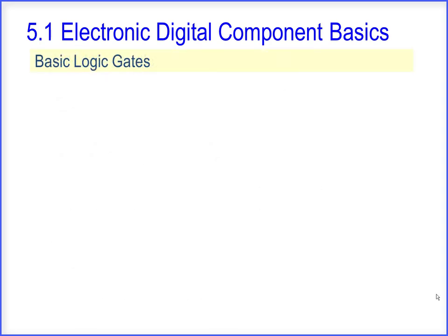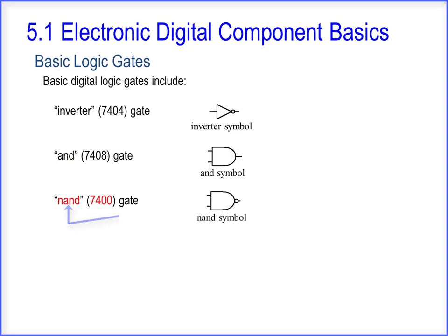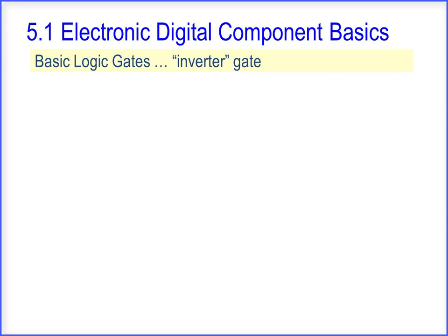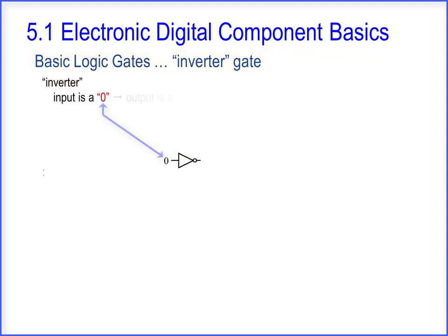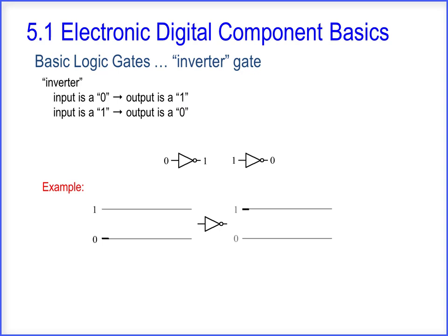Basic digital logic gates include an inverter gate, an AND gate, an OR gate, and a NOR gate. Starting with the inverter gate: when the input is a 0, the output is a 1; when the input is a 1, the output is a 0. The output voltage is the opposite of the input voltage — an inverter.